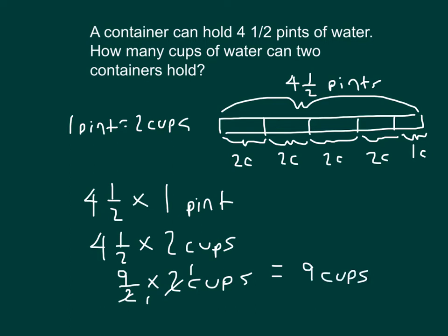So, just as my diagram is showing, in that container that holds four and one-half pints of water, I have two, four, six, eight, and nine. Now, the other part of the problem is asking how many cups two containers hold. So nine cups is one container, so I will go nine and nine, which is 18 cups.